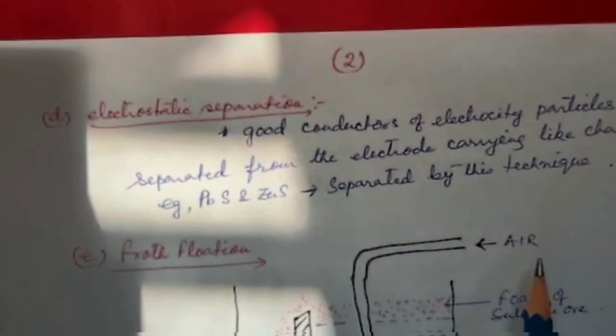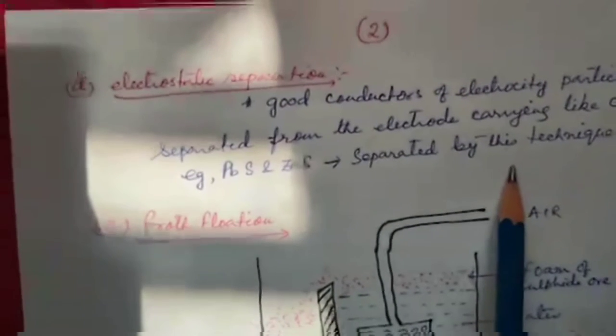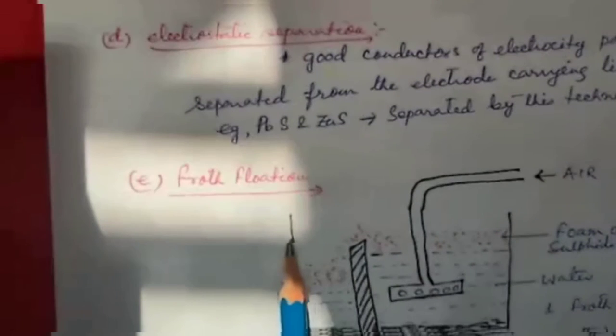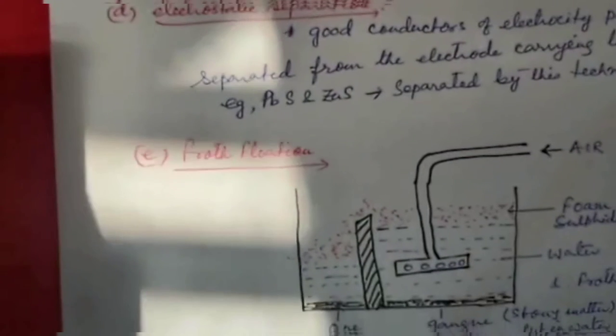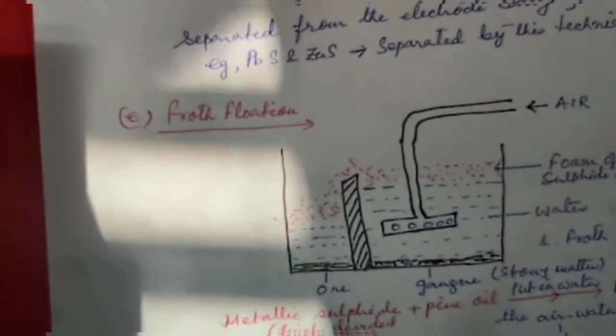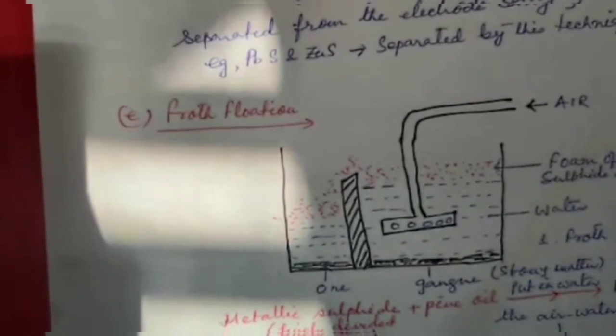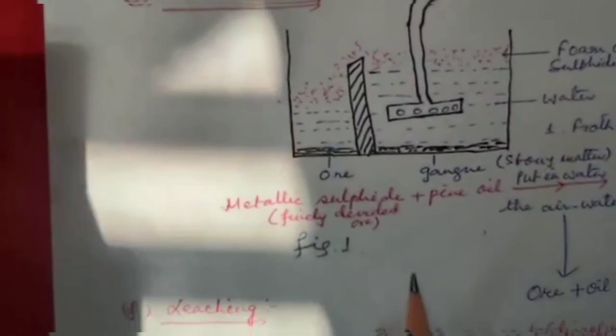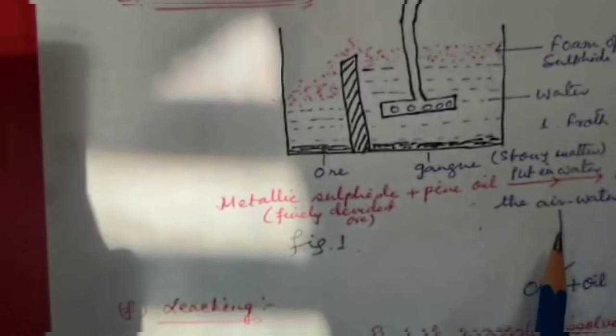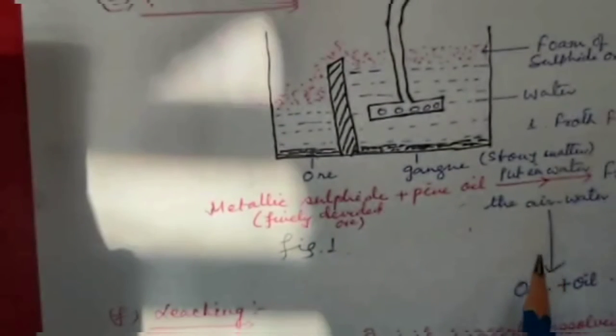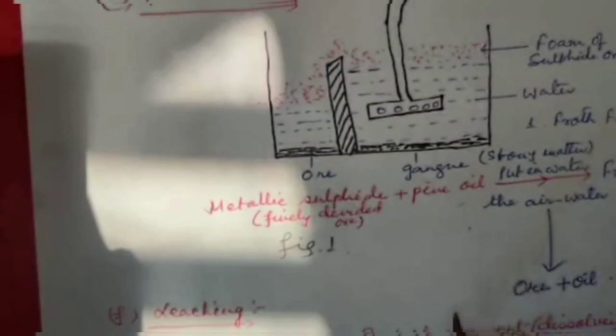Froth flotation: This process is based on the principle of preferential wetting of solids by liquids. In this case, metallic sulphides are wetted by certain oils like pine oil but not by water. The finely divided ore is put in water to which a small quantity of oil has been added. The water is agitated violently as shown in figure 1 when froth is formed.